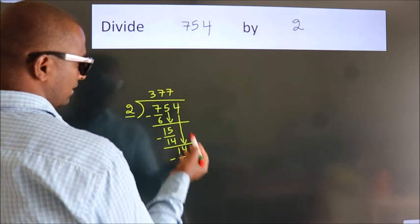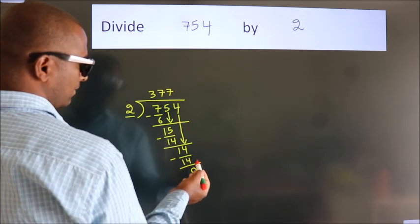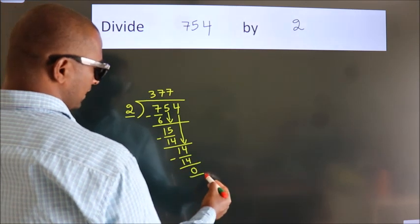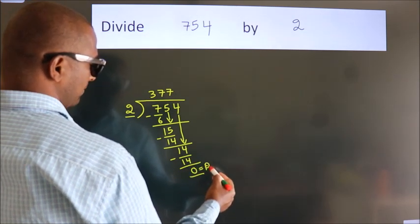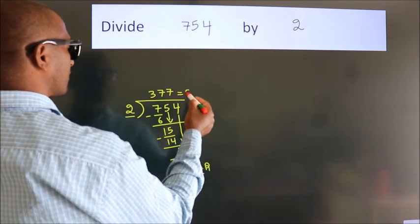After this, no more numbers to bring down. So we stop here. This is our remainder. This is our quotient.